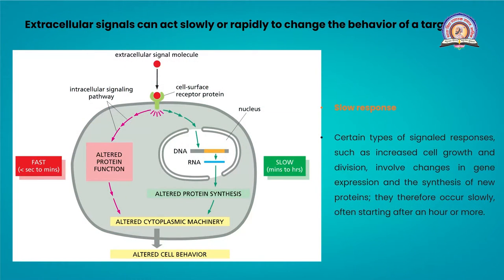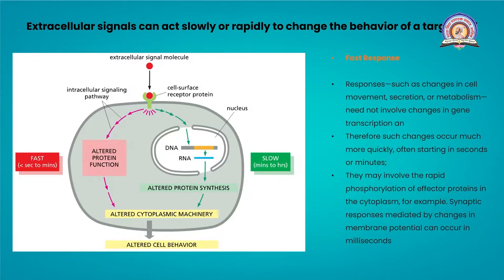Extracellular signals can act slowly or rapidly to change the behavior of target cells. Certain responses, such as increased cell growth and division, involve changes in gene expression and synthesis of new proteins — these occur slowly, over minutes to hours, and are slow responses. Fast responses, such as changes in cell movement, secretion, or metabolism, may not involve changes in transcription and can start in seconds or minutes. They may involve rapid phosphorylation of effector proteins in the cytoplasm, or synaptic responses mediated by neuronal cells.